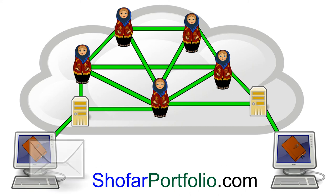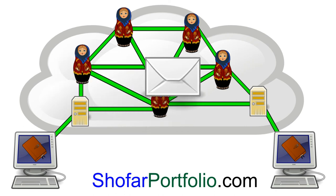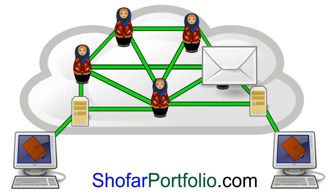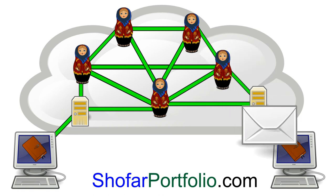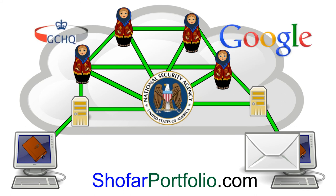With Matryoshka, your email is first broken up by your computer into fixed-length cryptograms. Each cryptogram is encrypted for the receiver only. An address for a Matryoshka node is put on the cryptogram and it again is encrypted for that node only. This process is repeated several times. Cryptograms are then sent on a contorted journey. A given Matryoshka node only knows where the cryptogram previously came from and where it is going next. A given Matryoshka node cannot determine anything about where the message originated, the final destination, or the size of the message. Even if one or more Matryoshka nodes are operated by an organization who wants to know about you, they gain nothing.